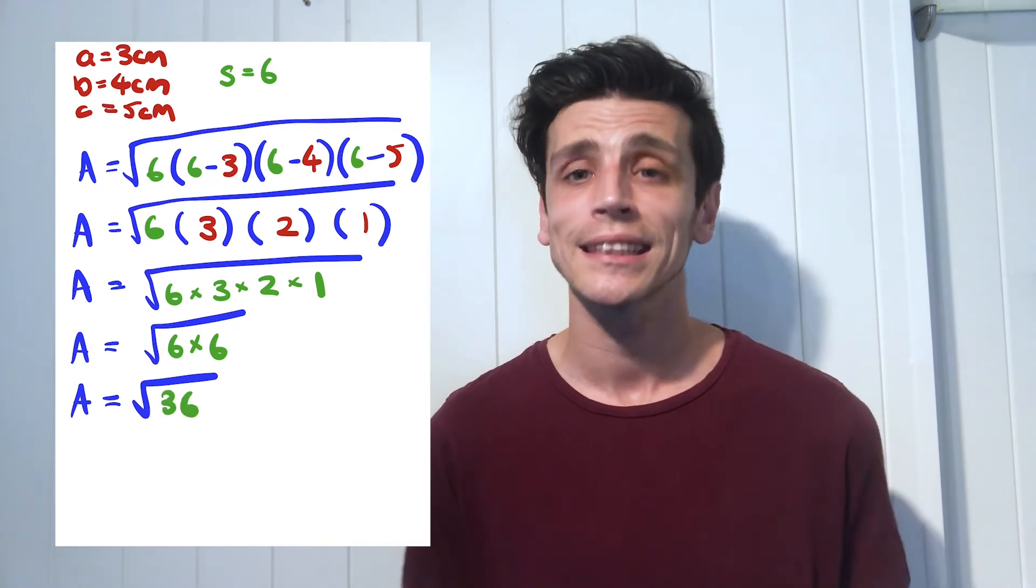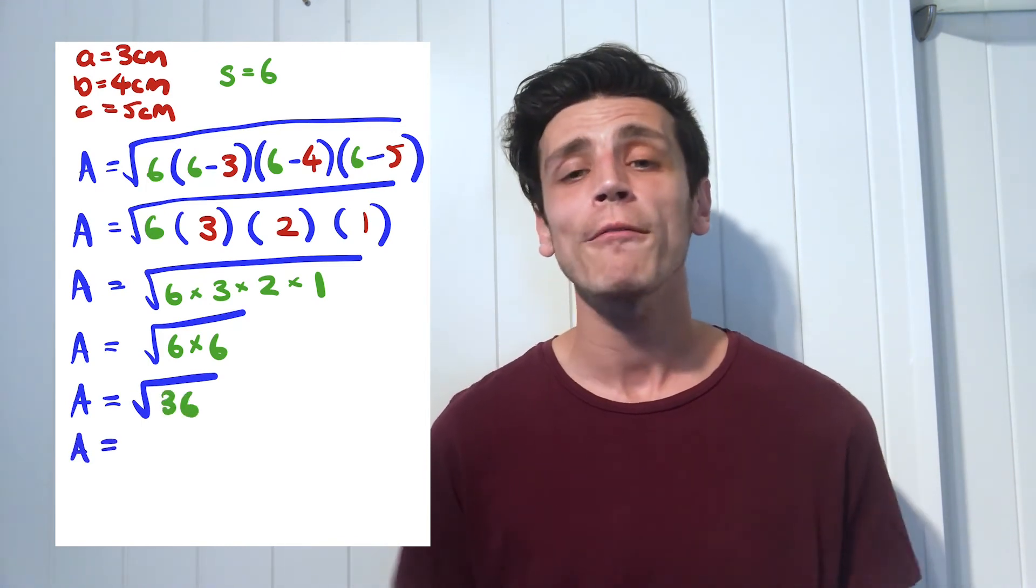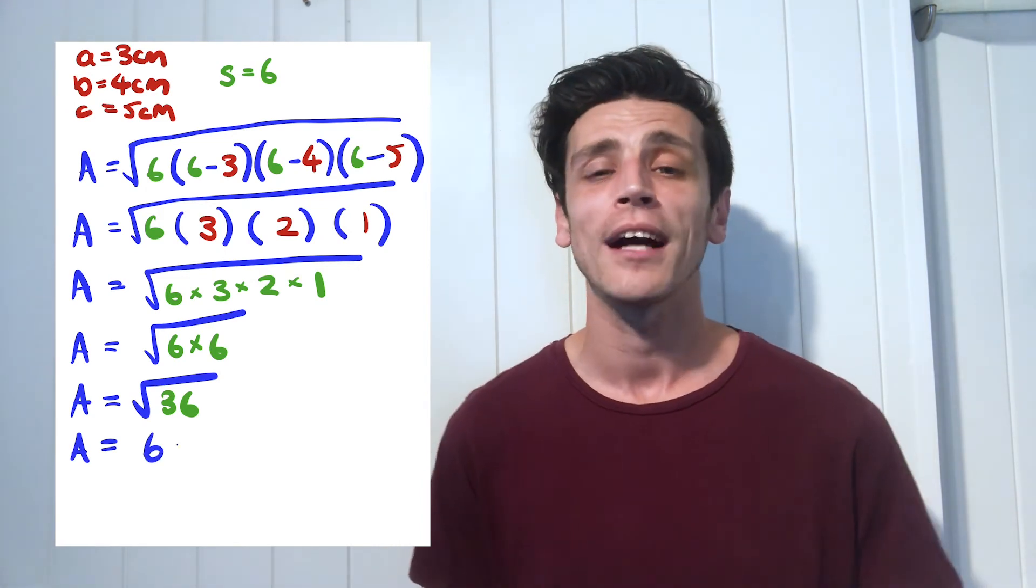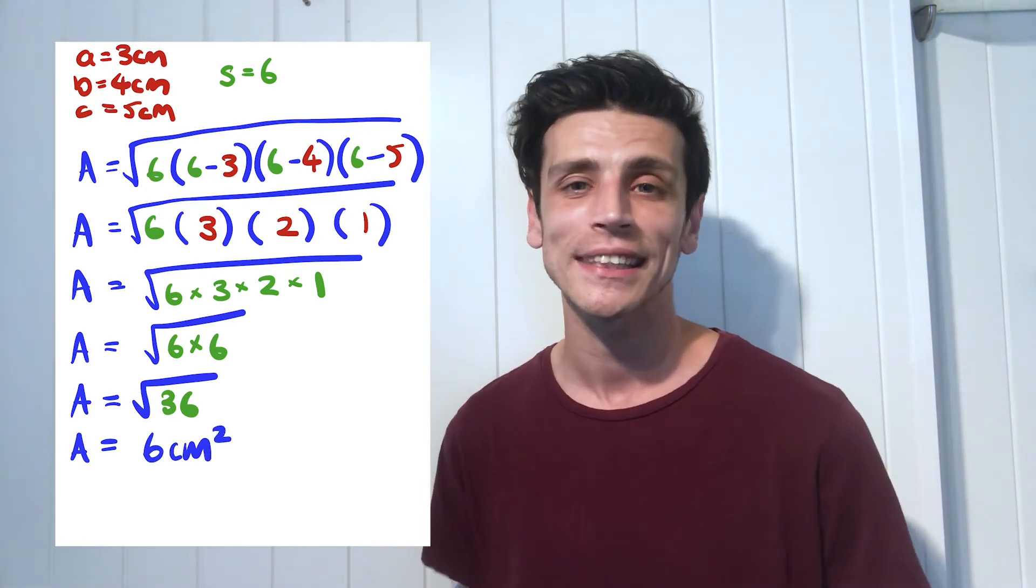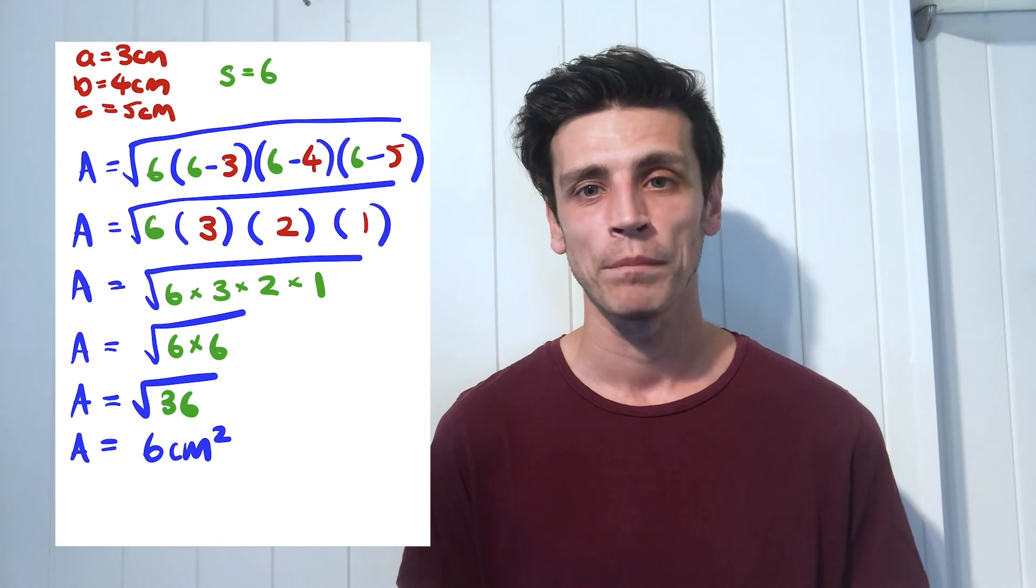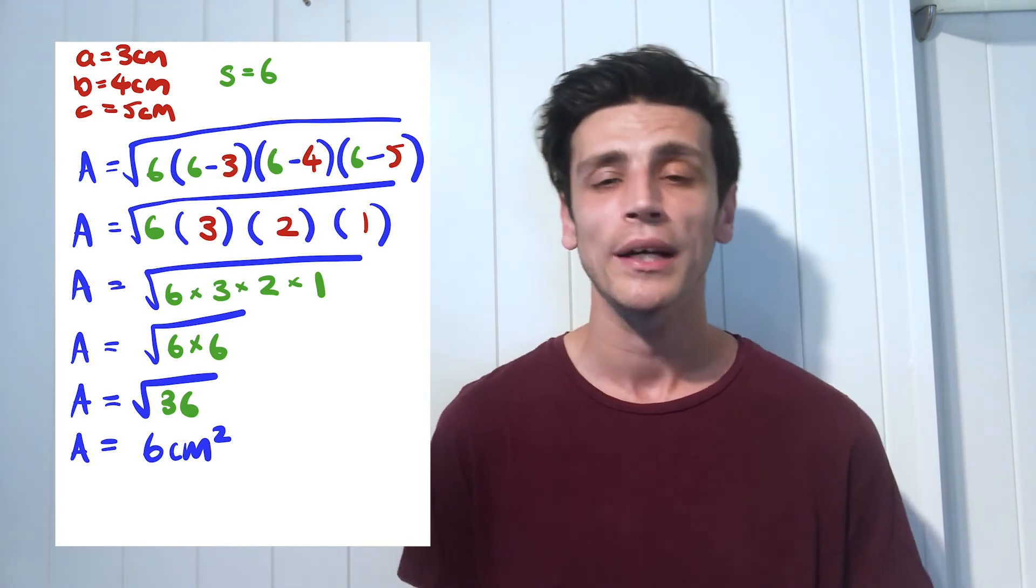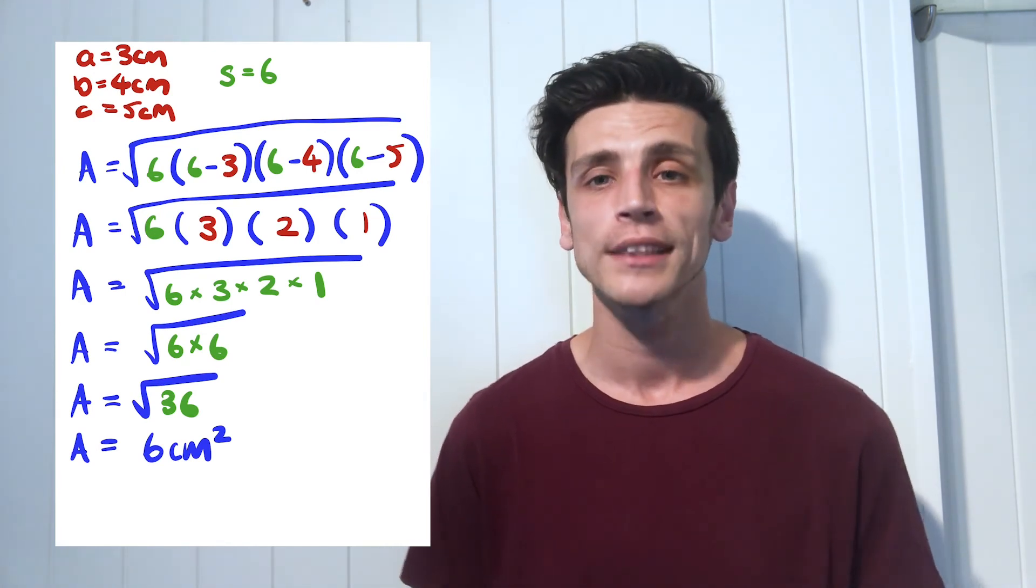And six multiplied by six is thirty-six, but when we're finding the square root we're actually trying to find a number that we can multiply by itself to give the exact same answer. So the square root of thirty-six will in fact bring us back to the answer of six.